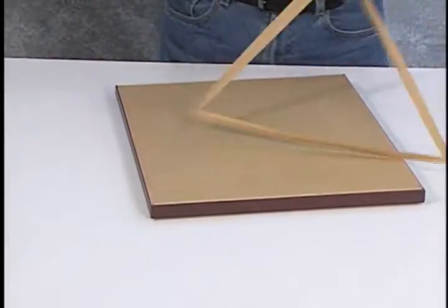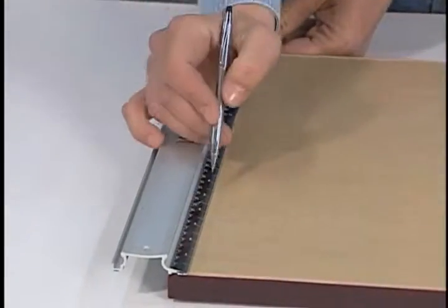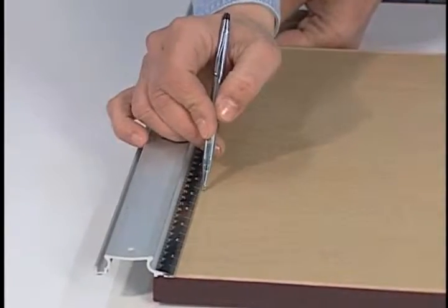To add a hanging wire to the frame, measure down about one-third of the frame on each side and mark.